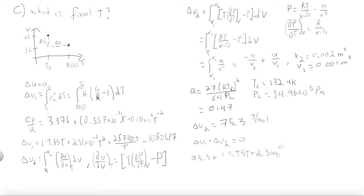So 75.3 plus 19.75 times temperature plus 2.31 times 10 to the negative 3 T squared and so on. So writing up the terms here is equal to 0. And there will be three solutions to this.